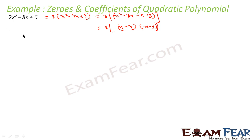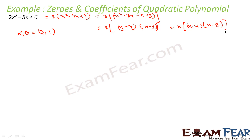Thus α and β are 3 and 1, because the factored form matches k(x − α)(x − β). We also know that α + β = −B/A and α·β = C/A — we will now prove this.